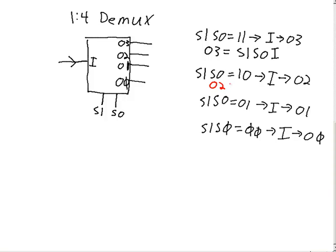So following that same basic logic, output two is going to be a one if S1 is a one, S0 is a zero, and I is a one. For any other case, output two will be a zero. Output one will be a one if S1 is a zero, S0 is a one, and I is a one. In all other cases, output one will be a zero.